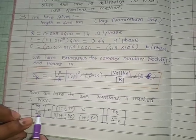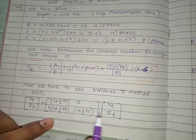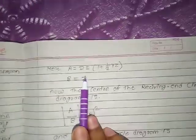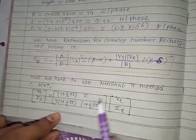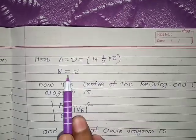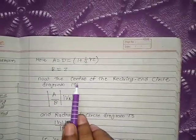For the nominal pi method, the ABCD parameters are: A = D = 1 + (1/2)YZ, and B = Z. Now we need to calculate the center of the receiving end circle diagram using the formula: center = (|A|/|B|) × Vr² at an angle β − α.